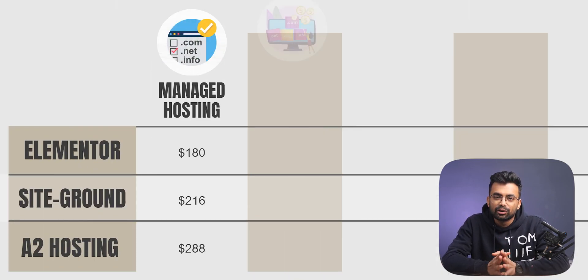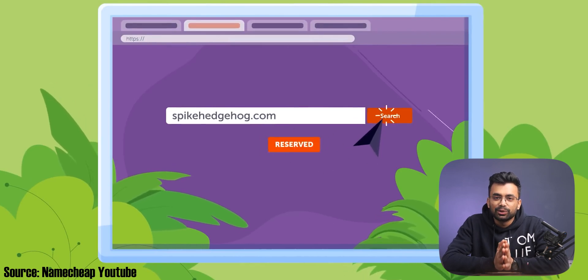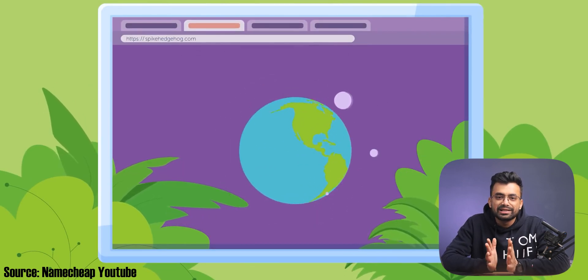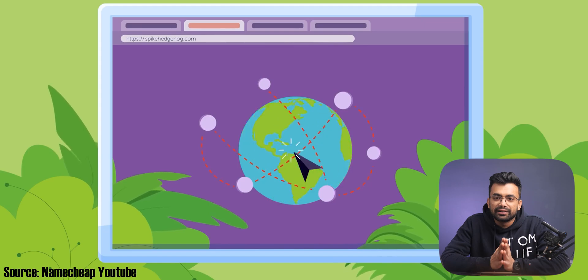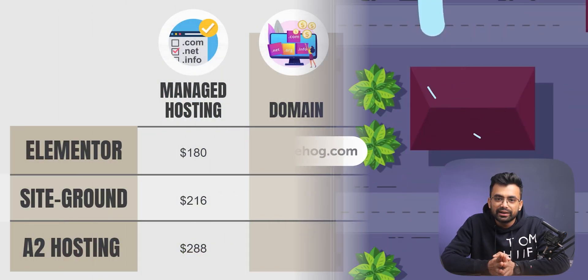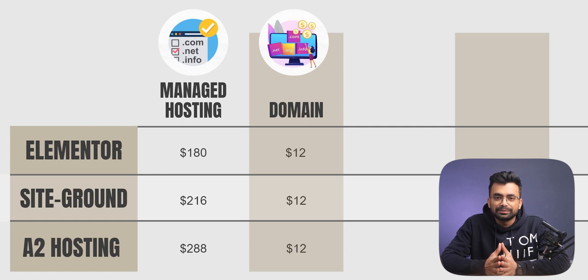Second, you would need a domain name — that's the alphabetical address of your website. You can get it from any domain name provider and connect it to hosting. You just have to add a record in your domain name provider — it's an easy process. On average, a domain costs about $12 per year.